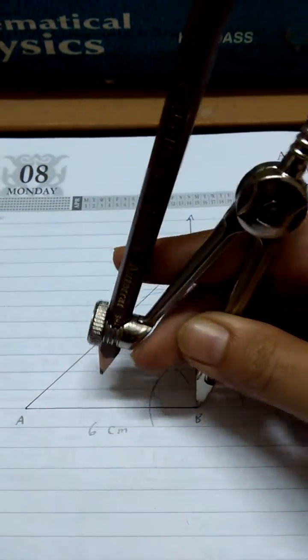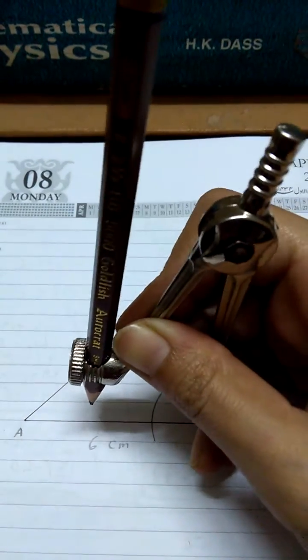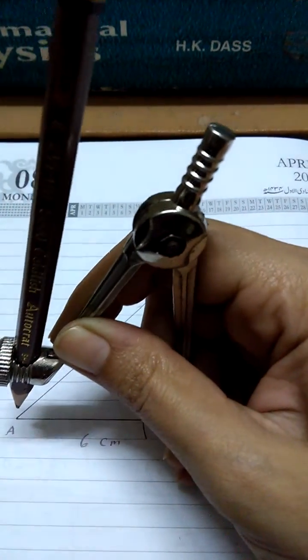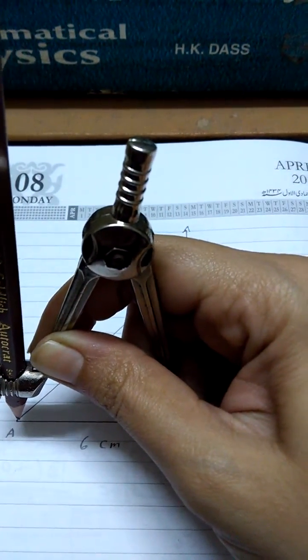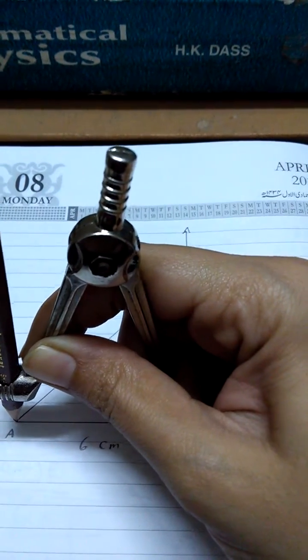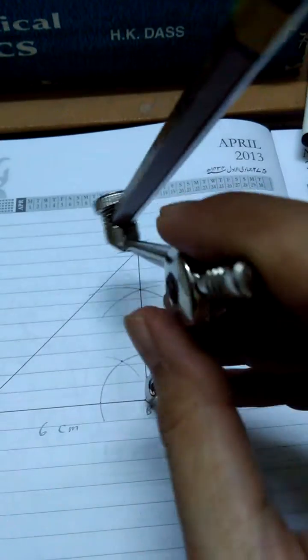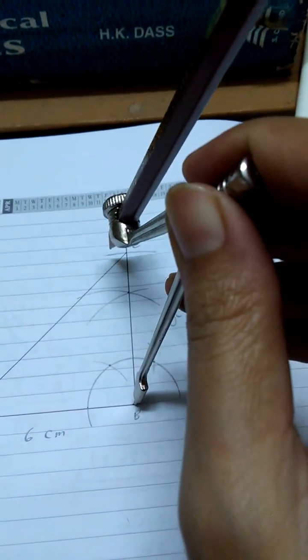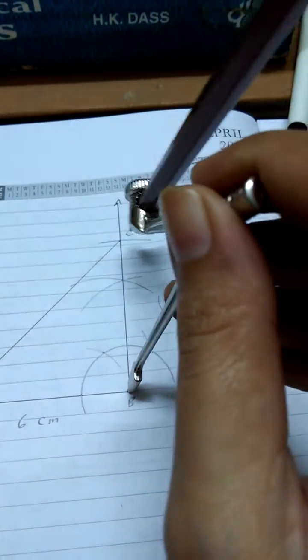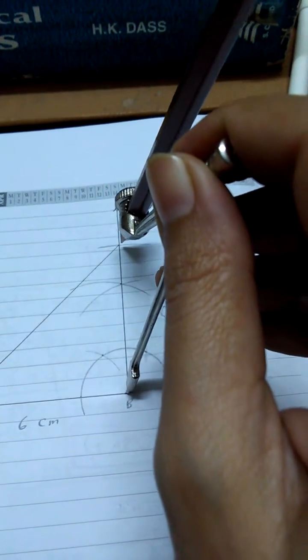You just stretch your compass once again up to 6 centimeter length carefully like this. Then you put your needle at the B point and put the arc over here...